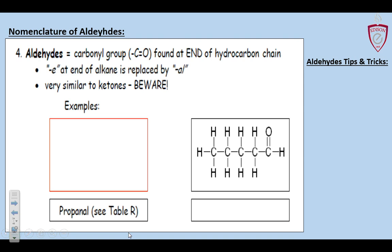Aldehydes — now things are going to get a little tricky. This is a C with a double bonded O at the end of a hydrocarbon chain. Chemists would sometimes call that a carbonyl group, but you can call it C double bonded O. As long as it's at the end of a chain, it makes an aldehyde.